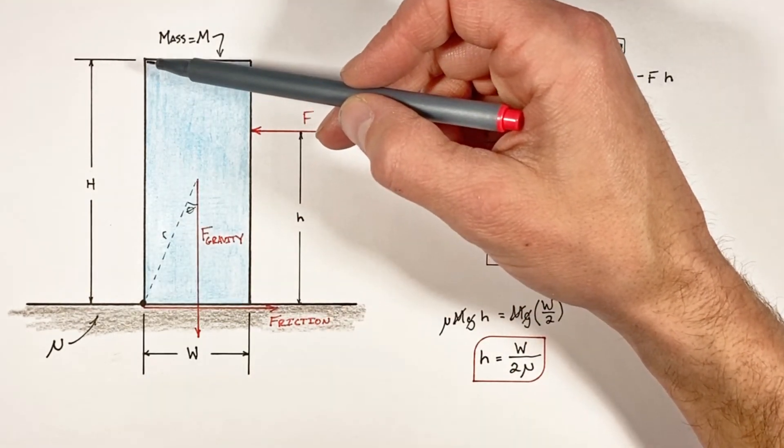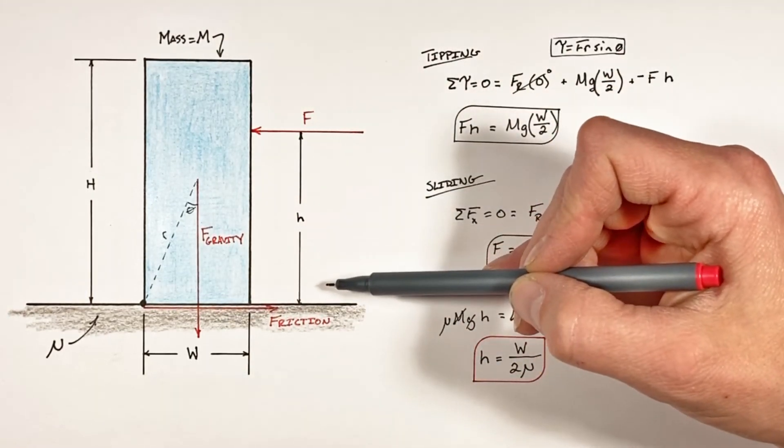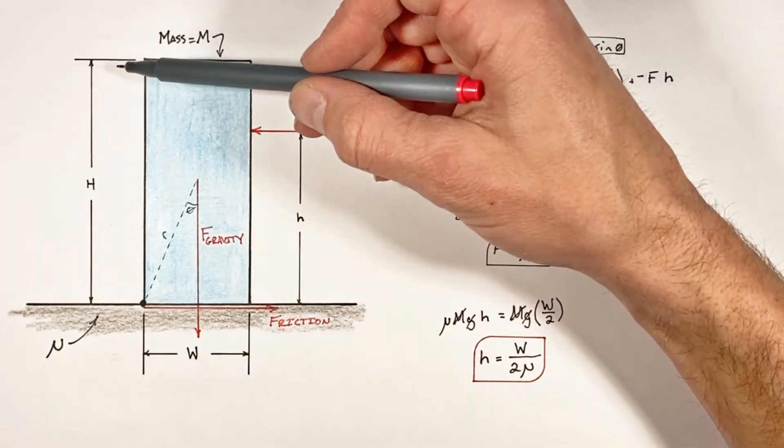If this value h was found to be greater than the actual height of the block, there's no point along the actual block that you could push in order to force it to tip.